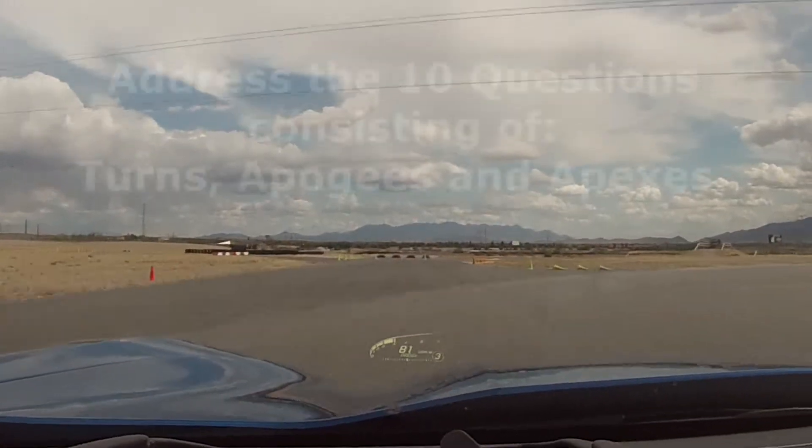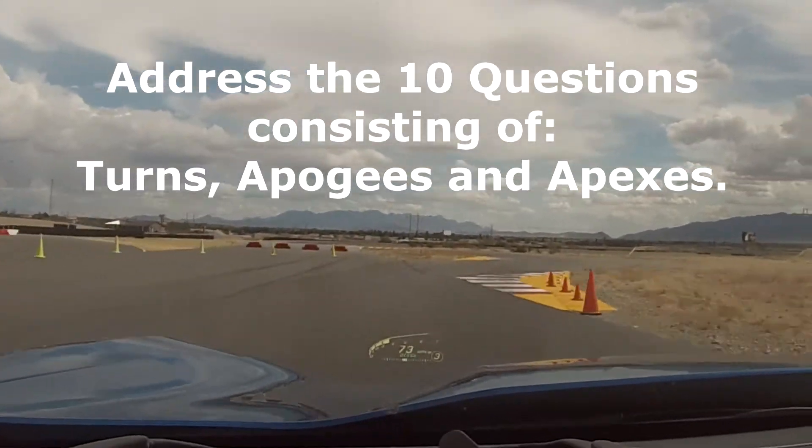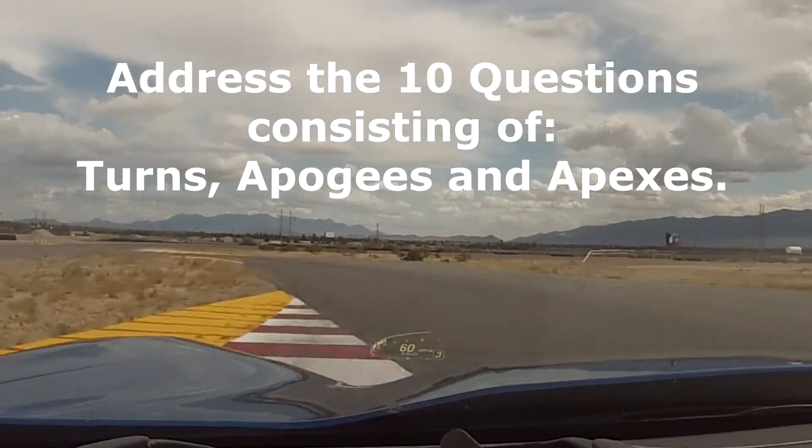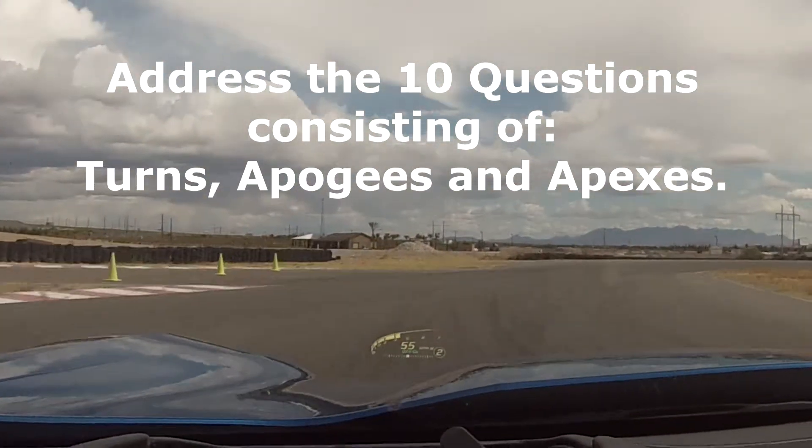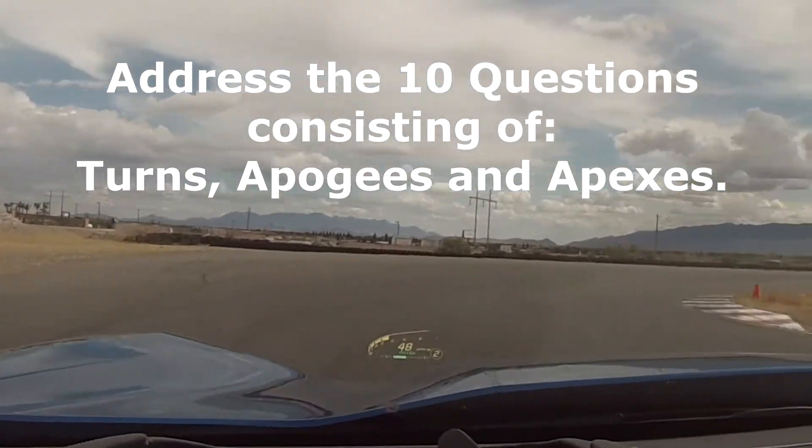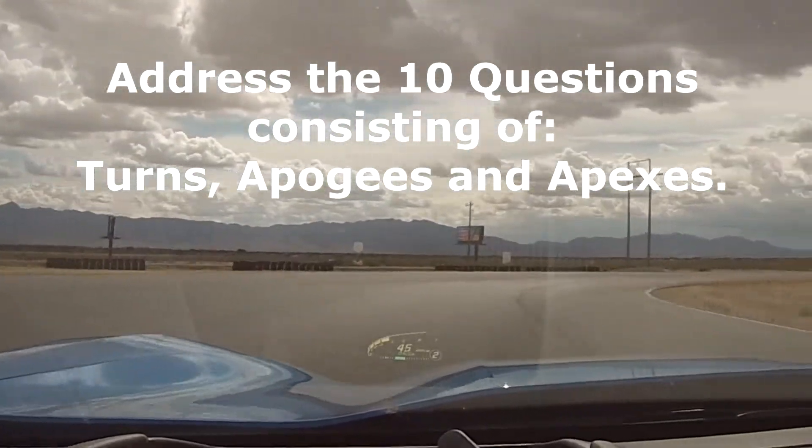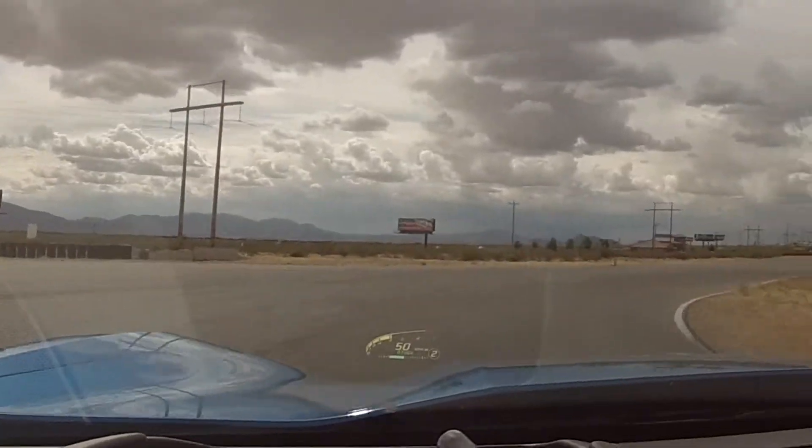Coming into the bus stop turn is critical. There are ten questions involving the turns, the apogees, and the apexes. If you do these correctly and enter 16 and 17 the right way, you're going to get your best speed down the Michelin straight.